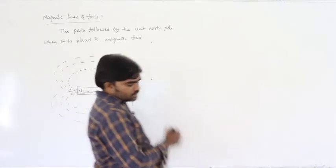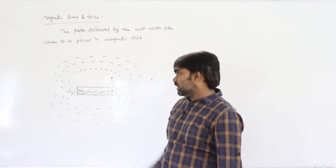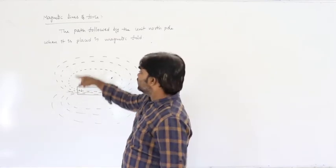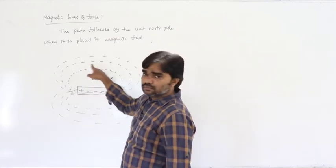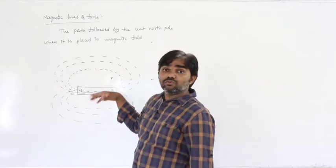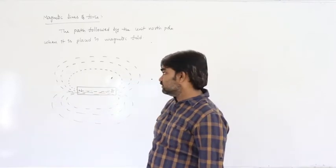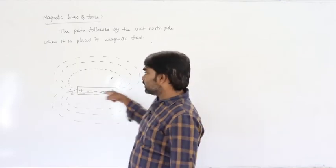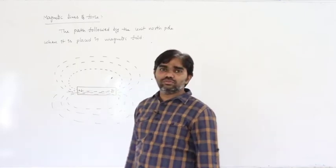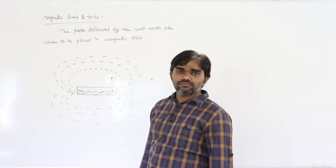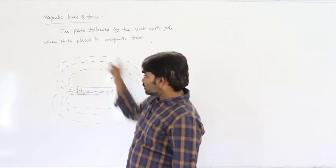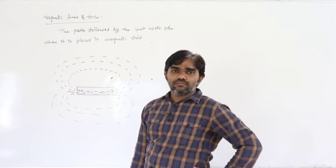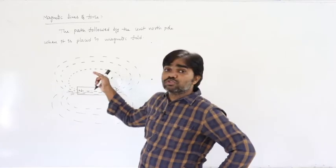Outside the magnet, the direction of magnetic lines of force is from north to south, but inside the magnet they are from south to north. So these are closed loops.